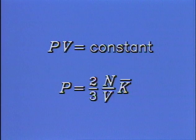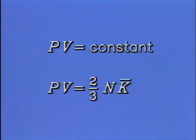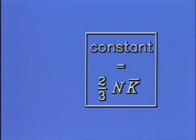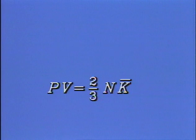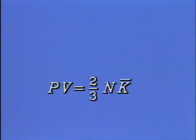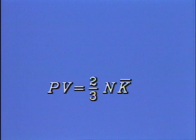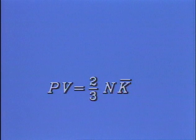The application of mechanics to the properties of a gas explained the inner meaning of that law. The constant in Boyle's law is equal to two-thirds the number of molecules times the average kinetic energy per molecule. In other words, PV is proportional to the total kinetic energy of all the molecules of the gas. That kinetic energy is a form of heat. Therefore, heating a gas either causes its pressure to rise or its volume to expand. And heating a gas can also cause its temperature to rise. So temperature is related to pressure and volume — but how?